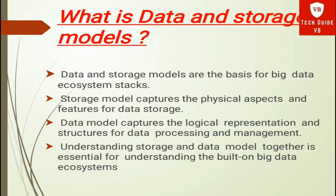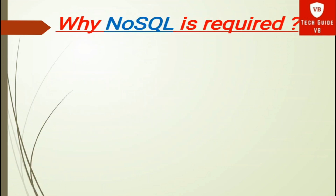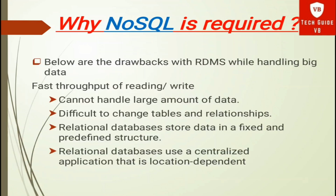Understanding storage and data models together is essential for understanding the big data ecosystem. Before we start about storage models, let's first understand what NoSQL means. NoSQL means 'not only SQL,' which means we are going to retrieve and store data from non-relational databases. Below are the drawbacks of RDBMS while handling big data.